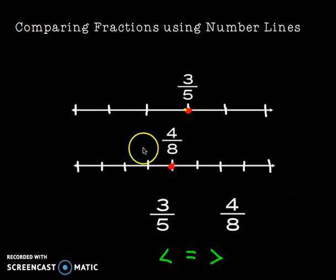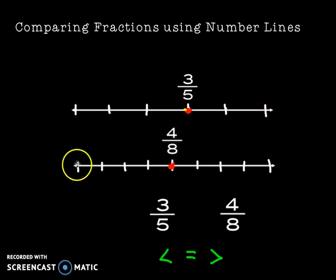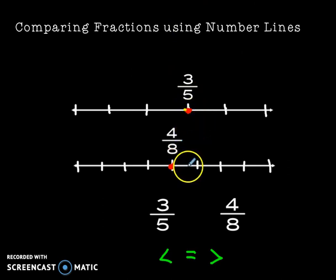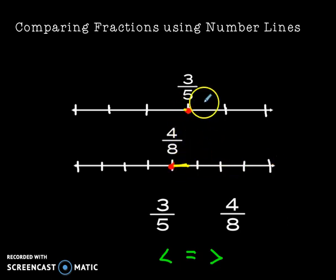And let's take a look at our final way — number lines. If I make my number lines the same length and I find three-fifths on the number line, you can see that it is bigger than four-eighths. Four-eighths would be right about here, and you can see that it's about this much farther along, closer to one. So, three-fifths is actually greater than four-eighths.